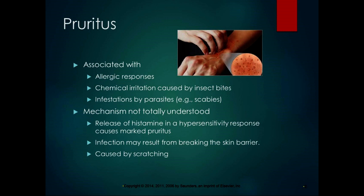Pruritus, which is the medical term for itching, is associated with allergic responses, chemical irritation caused by insect bites, and infection by parasites like scabies. The mechanism of pruritus is not totally understood — it might have to do with the release of histamine or nerve activation. Breaking the skin barrier caused by scratching can result in infection; you can introduce opportunistic pathogens from our normal flora into the area.